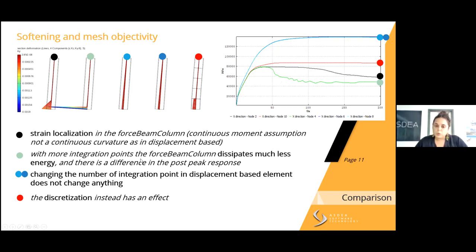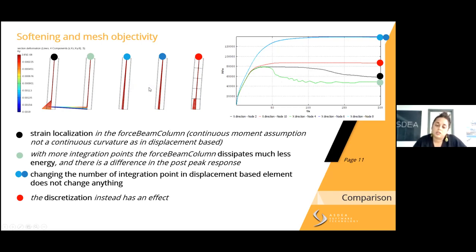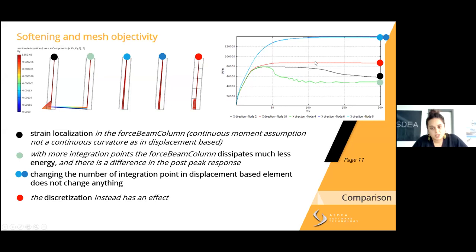For the displacement beam-column element, changing the number of integration points does not change the result in these terms and the displacement field remains continuous — no difference is seen between those two cases. However, when we start to discretize our beam with a displacement-based approach, the discretization does have an effect on the dissipation of energy.